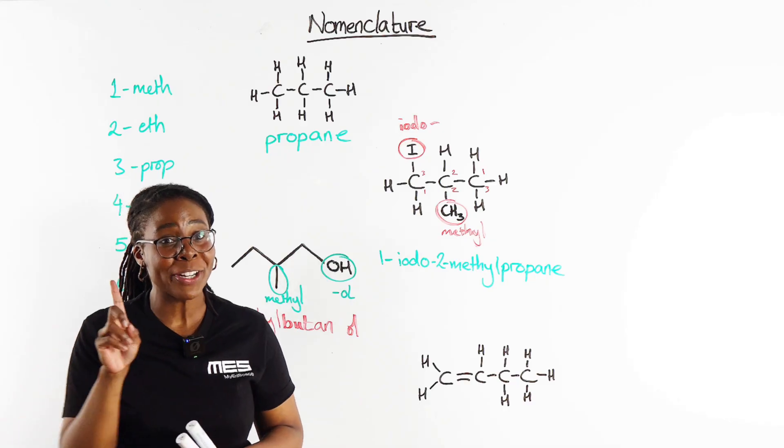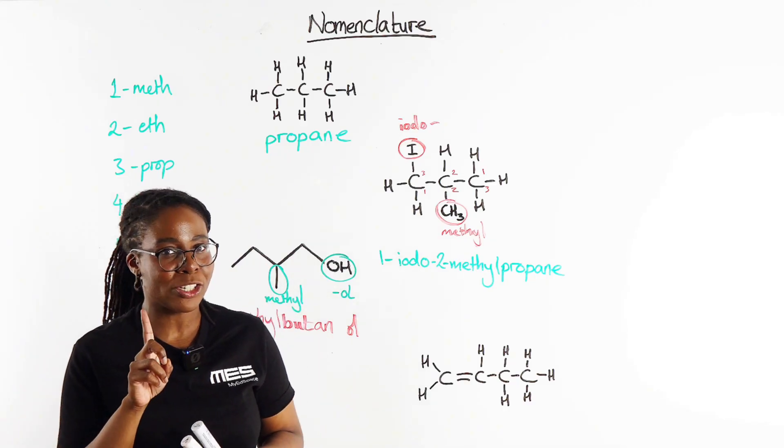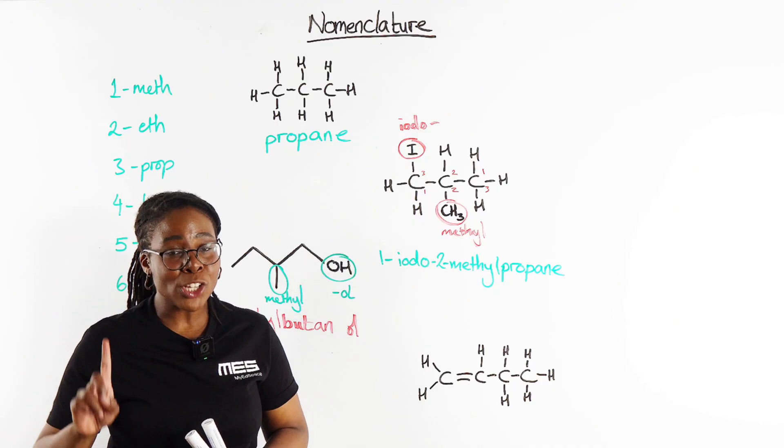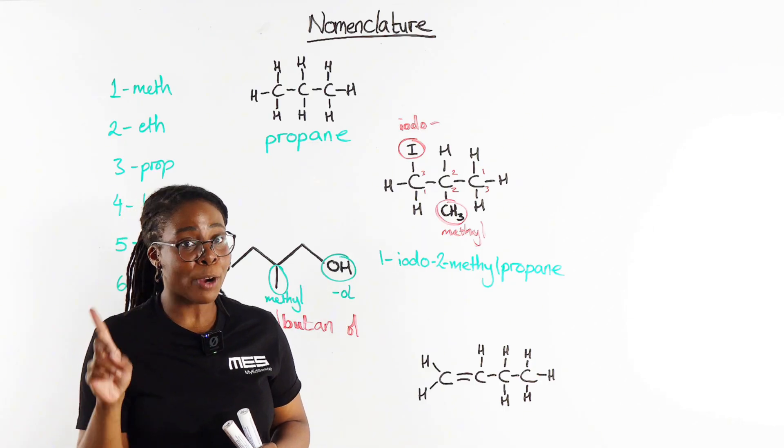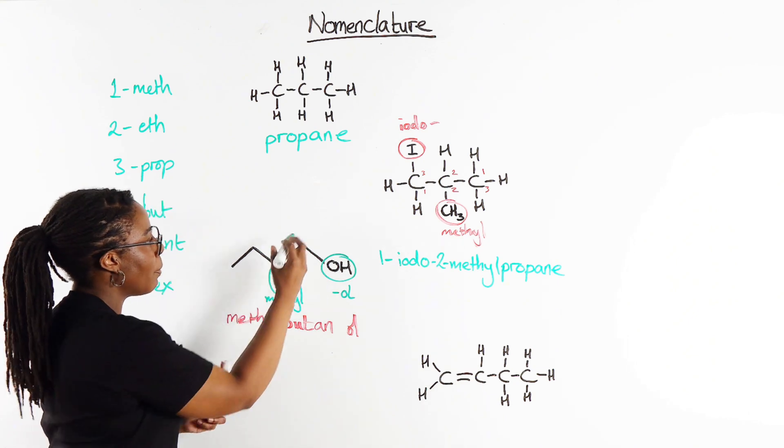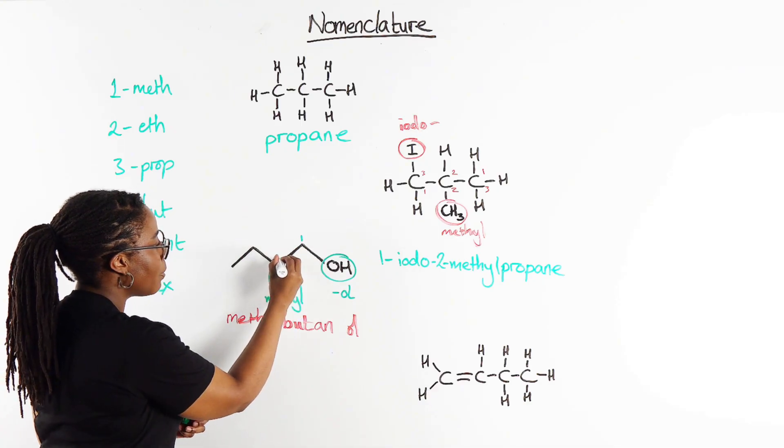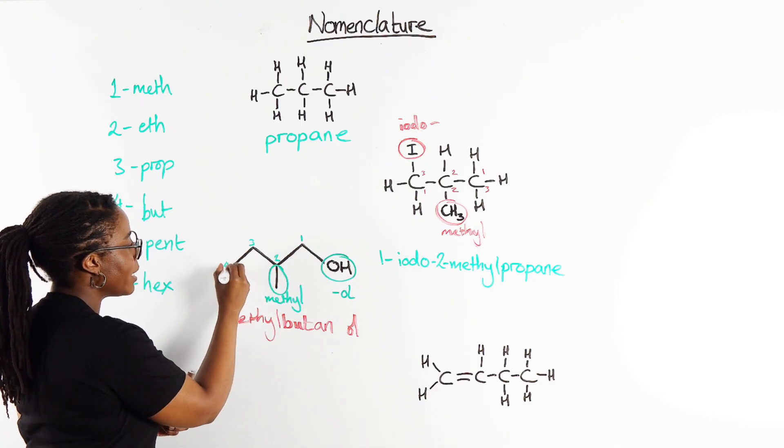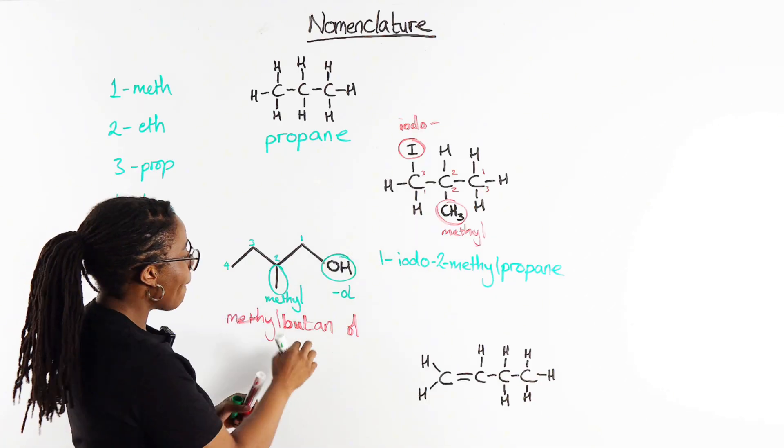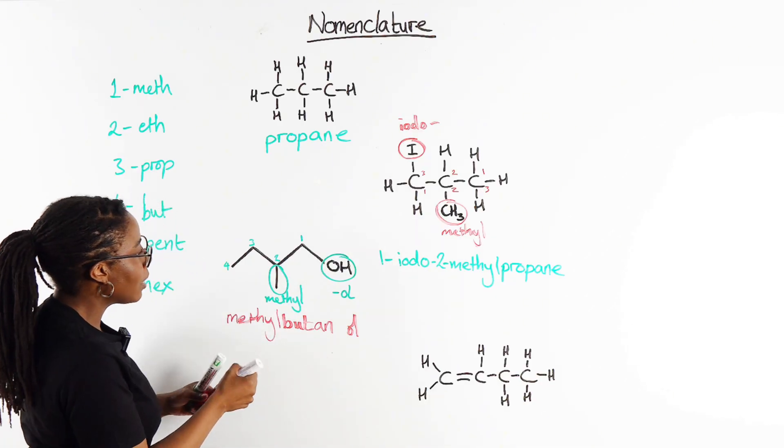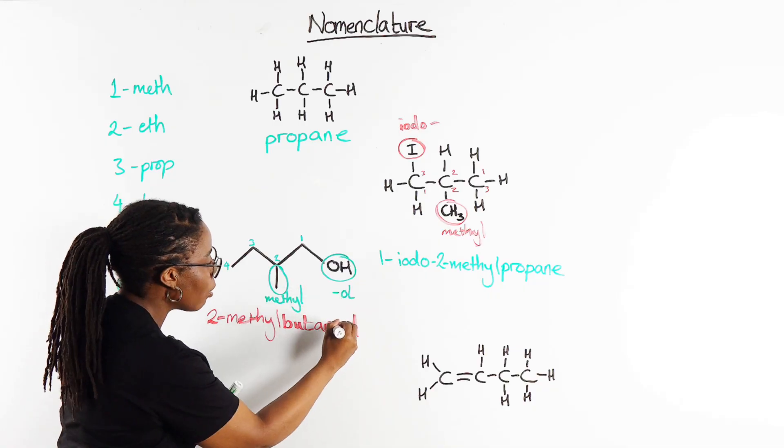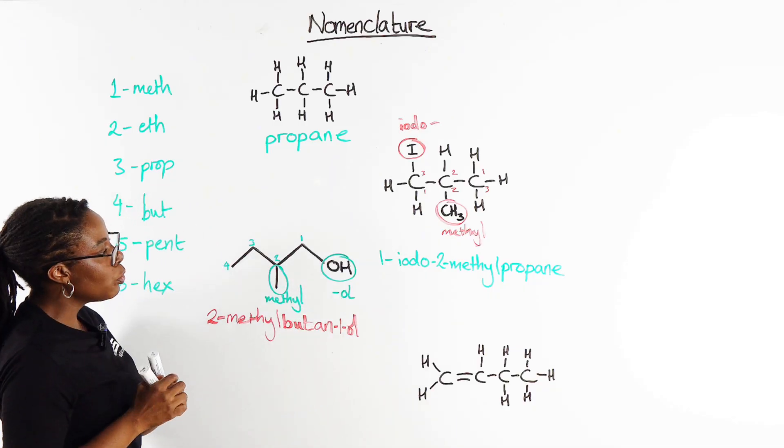We also once again have a one carbon branch just over here which would make this a methyl, and so this is methyl butanol. Again you see the gaps, let's make sure that we get our number in correct. And this is where you really have to pay attention, because whichever group gets the end of the name, that is going to be your highest priority, and the highest priority gets the lowest number. So that would make this carbon over here carbon number one, this carbon two, this three and this four.